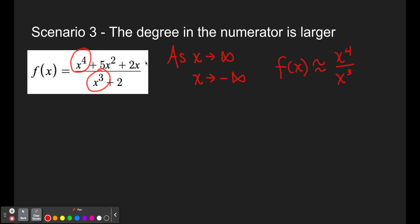adding 2, adding 5x squared plus 2x, those terms become less and less important the larger x gets. Just like we've done in all of these scenarios so far, we can simplify this new estimated version of f of x. Four x is being multiplied in the numerator, three x is being multiplied in the denominator, leaves us with x.